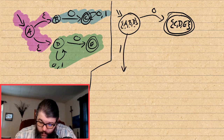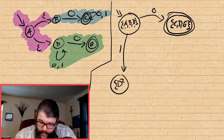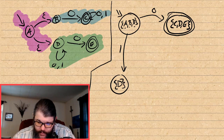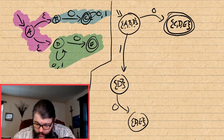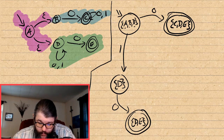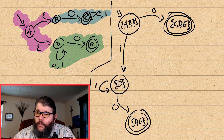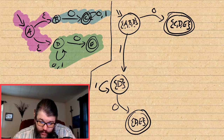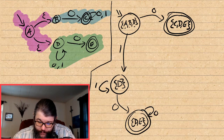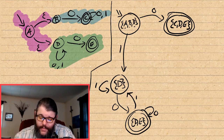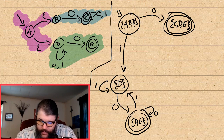On a 1 from {A, B, D}: A goes nowhere, B goes nowhere, but D goes back to itself. So on a 1 we go to the state {D} by itself. If we're in state {D} and we see a 0, we go to {D, E}, which is an accept state because E is an accept state. If we see a 1, we go back to state {D}.